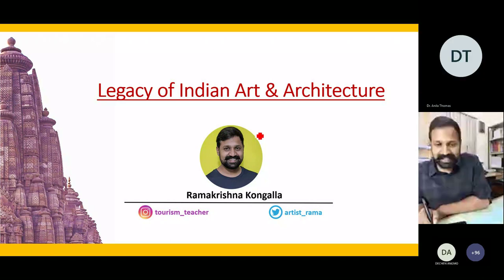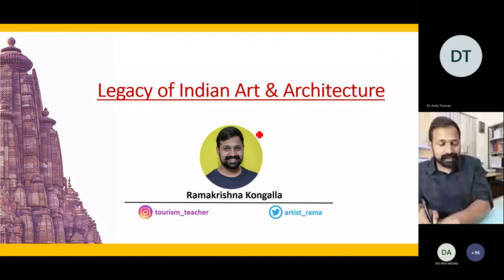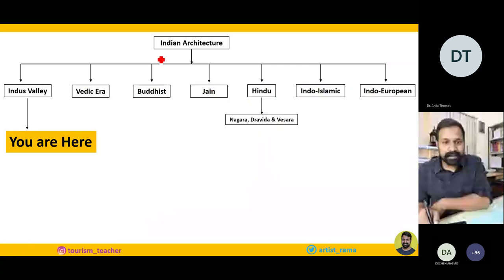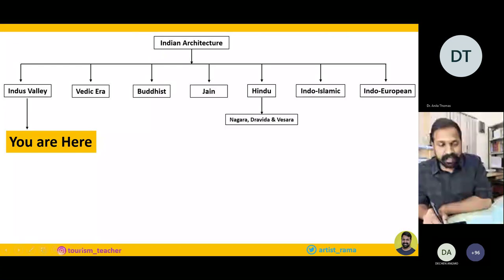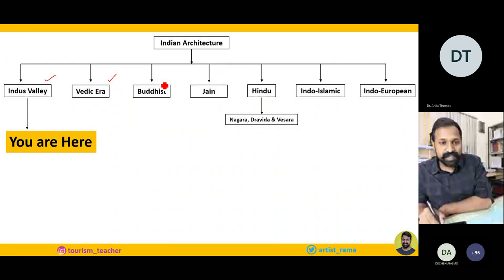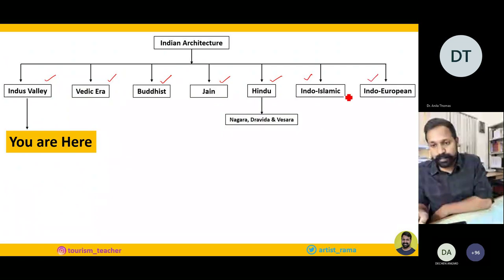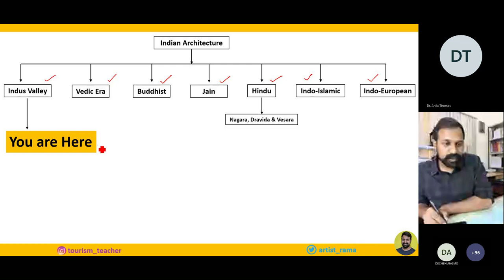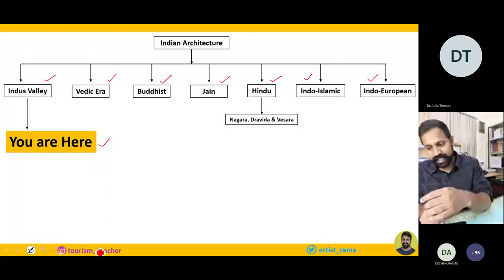For the next one and a half to two hours, we will be talking about the legacy of Indian Art and Architecture. Let me tell you how it can be classified: Indus Valley Civilization, Vedic Era, Buddhist Art and Architecture, Jain, Hindu, Indo-Islamic, and Indo-European or colonial architecture. Now we will have a quick glimpse at the Art and Architecture of the Indus Valley Civilization.